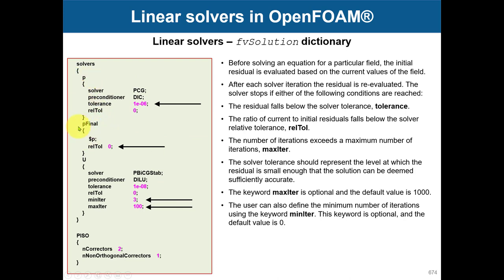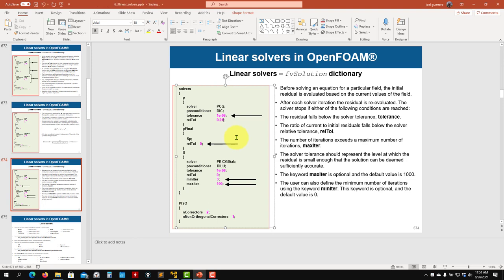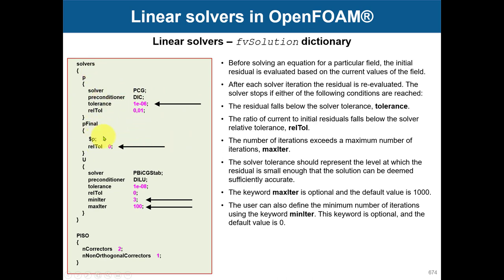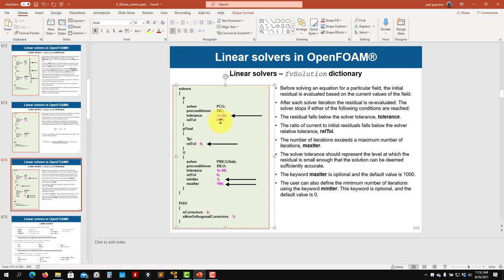In fvSolution you sometimes have P and P_final. You can use the same schemes for both but change some keywords. This means the initial iterations use one method, and the final iteration uses another with more accuracy — it's a way to speed things up. You also have the option to add minimum and maximum number of iterations. Be careful: if you put a limit on maximum iterations, you might end up with unconverged iterations. I like to use minimum iterations and set it to three.